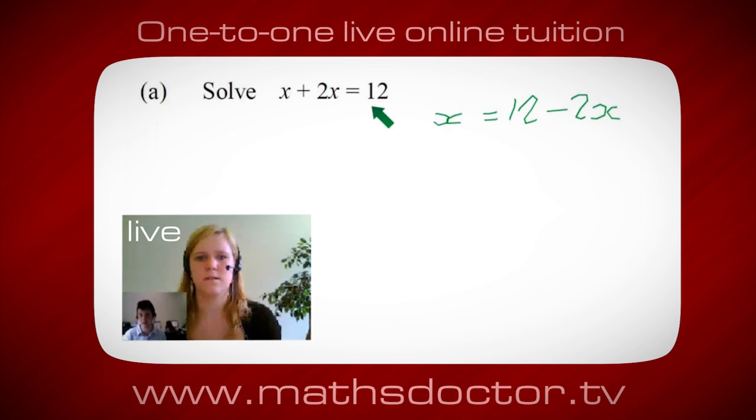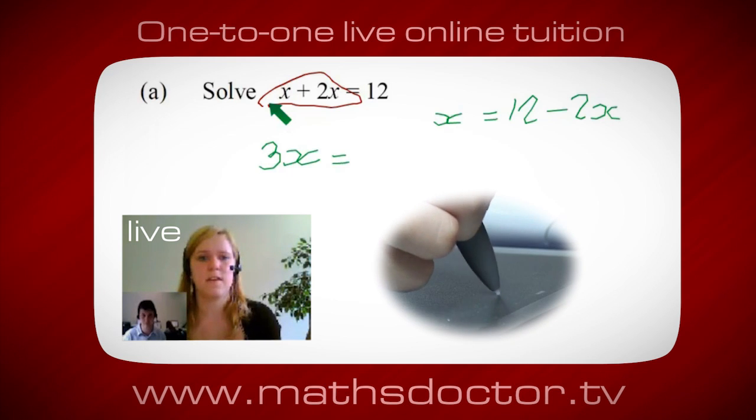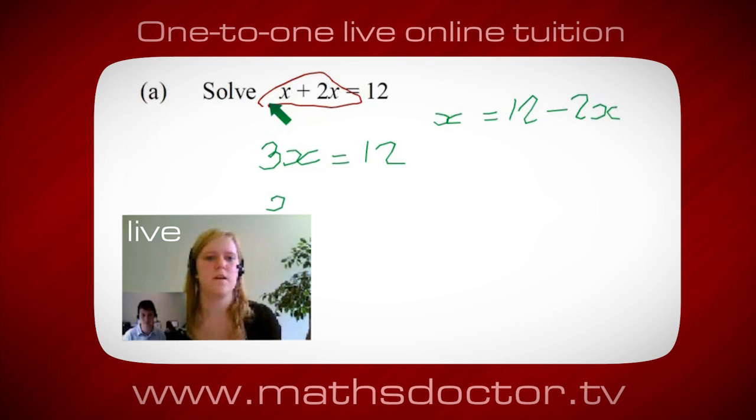So a lot of the time we want to get x by itself but what we want to do first is get all of these x's together so can you see anything we can do with this? Get all these together in one place. Oh, okay, it's 3x isn't it? Yeah, absolutely. So 3x equals 12. Oh, and so x equals 4. Brilliant, spot on, well done.